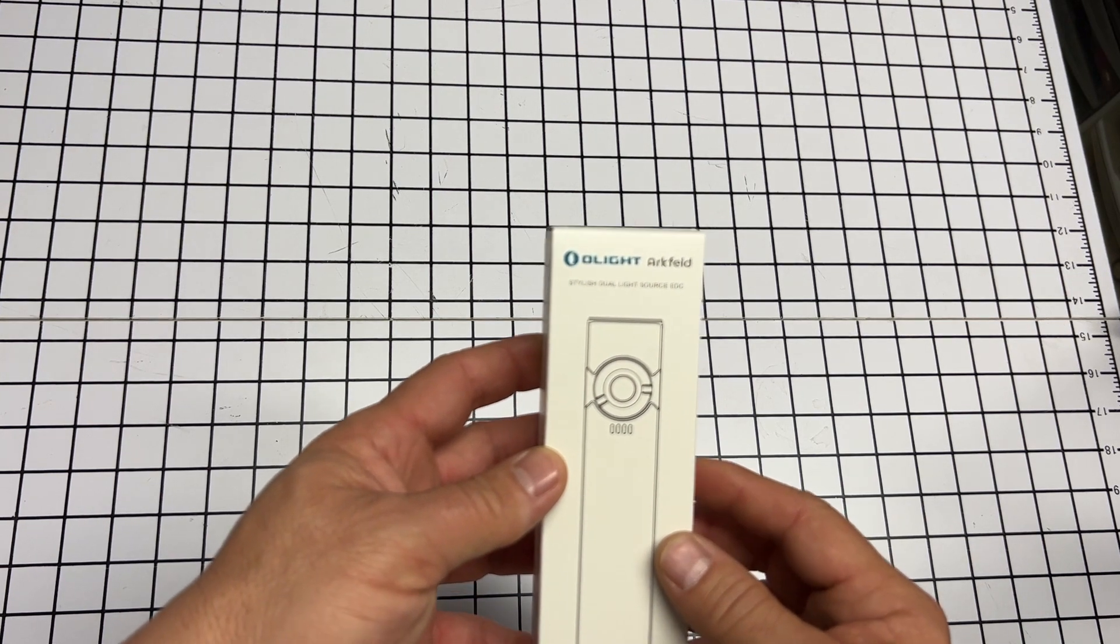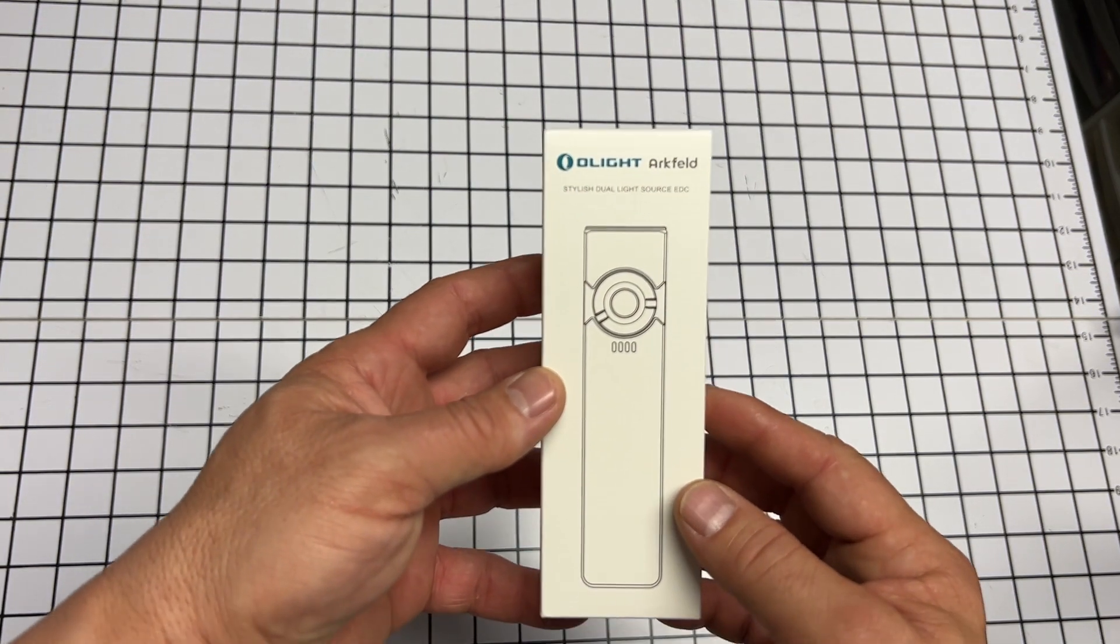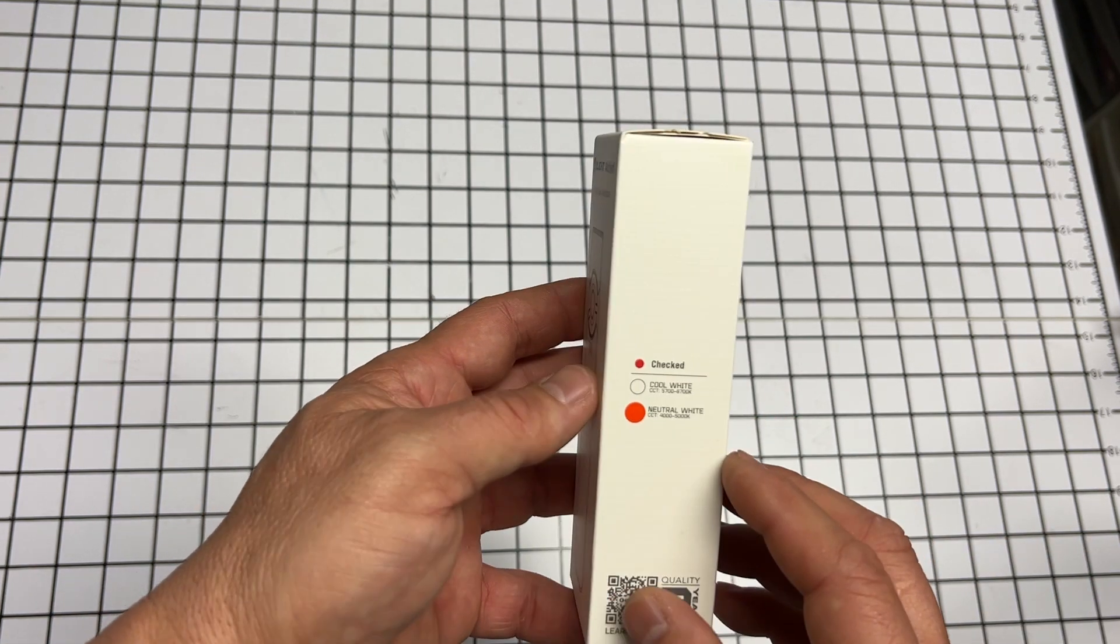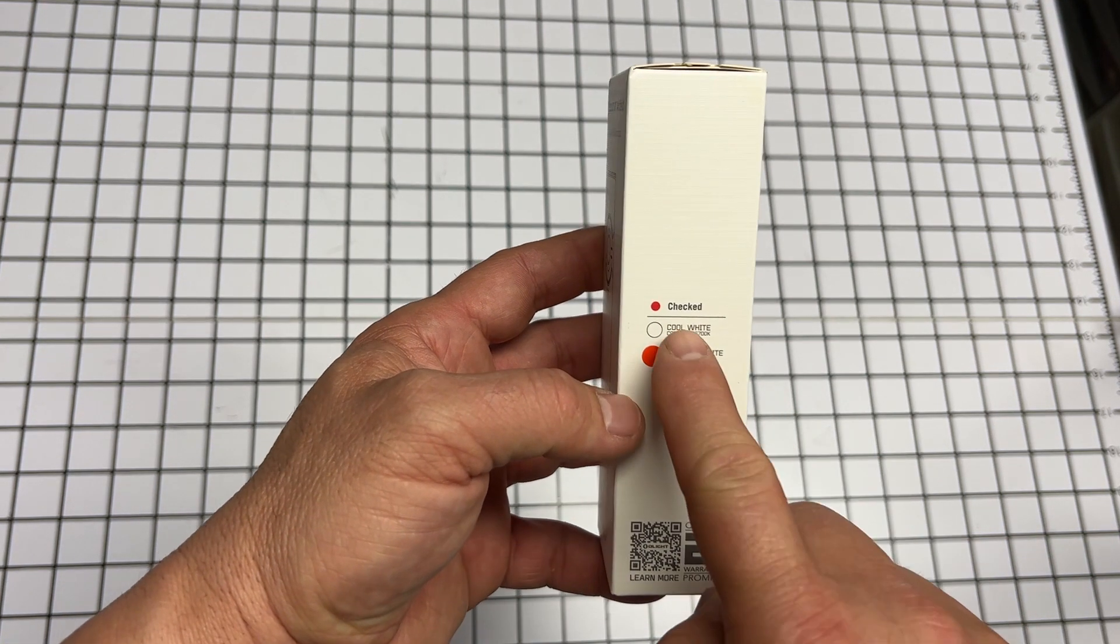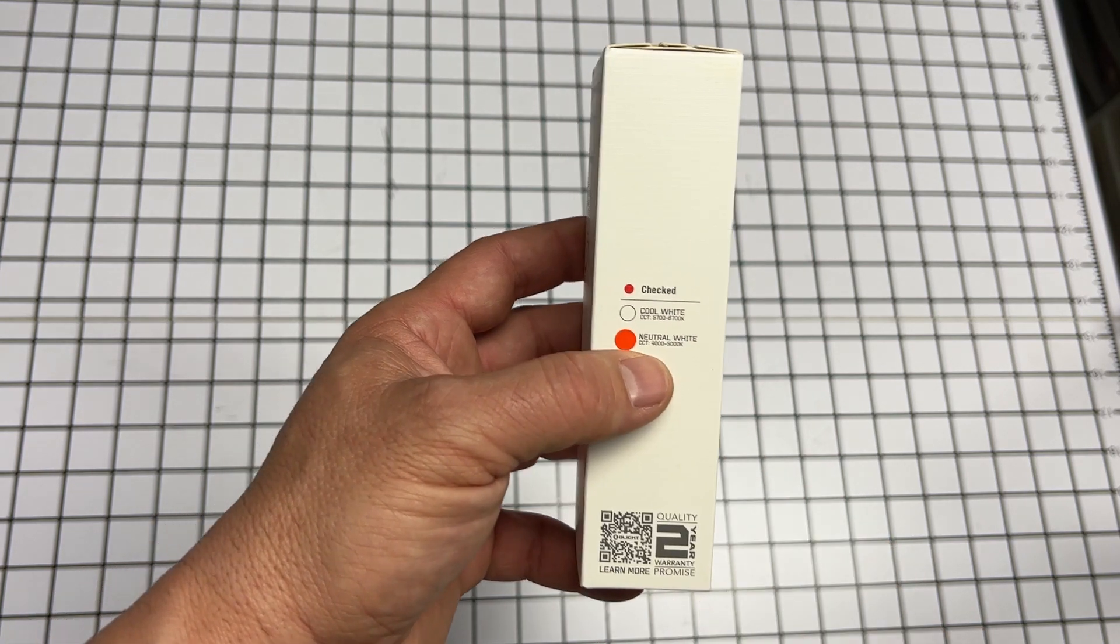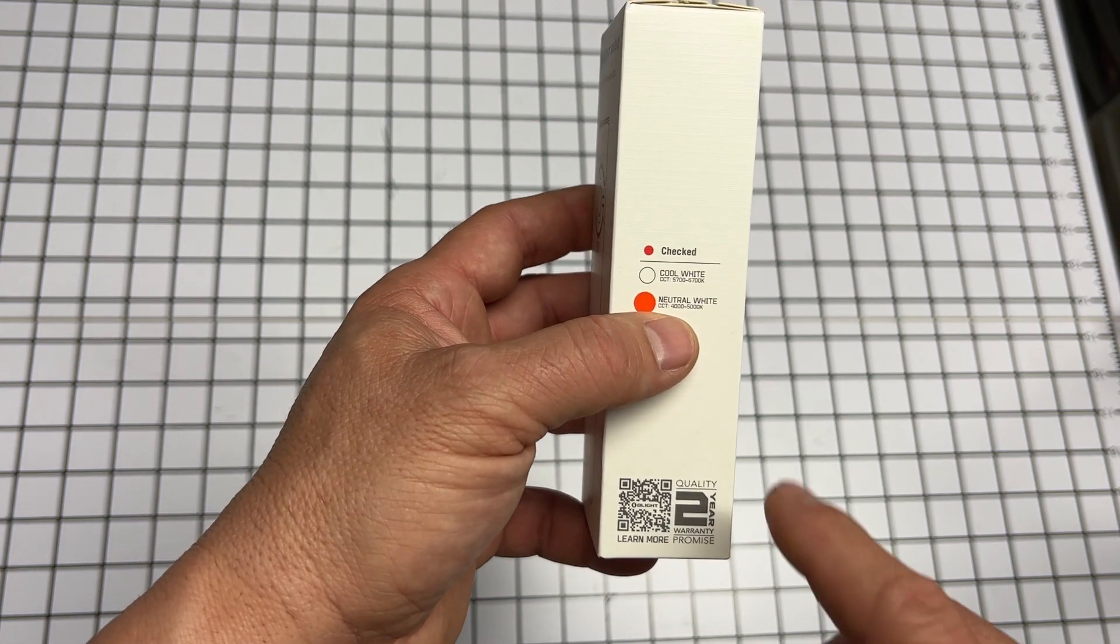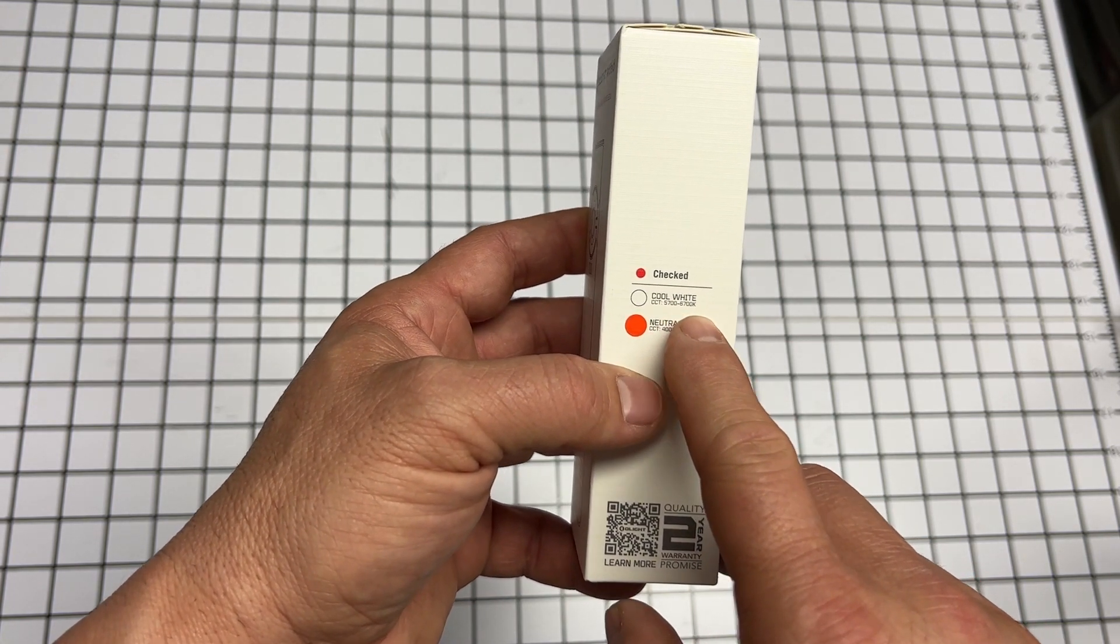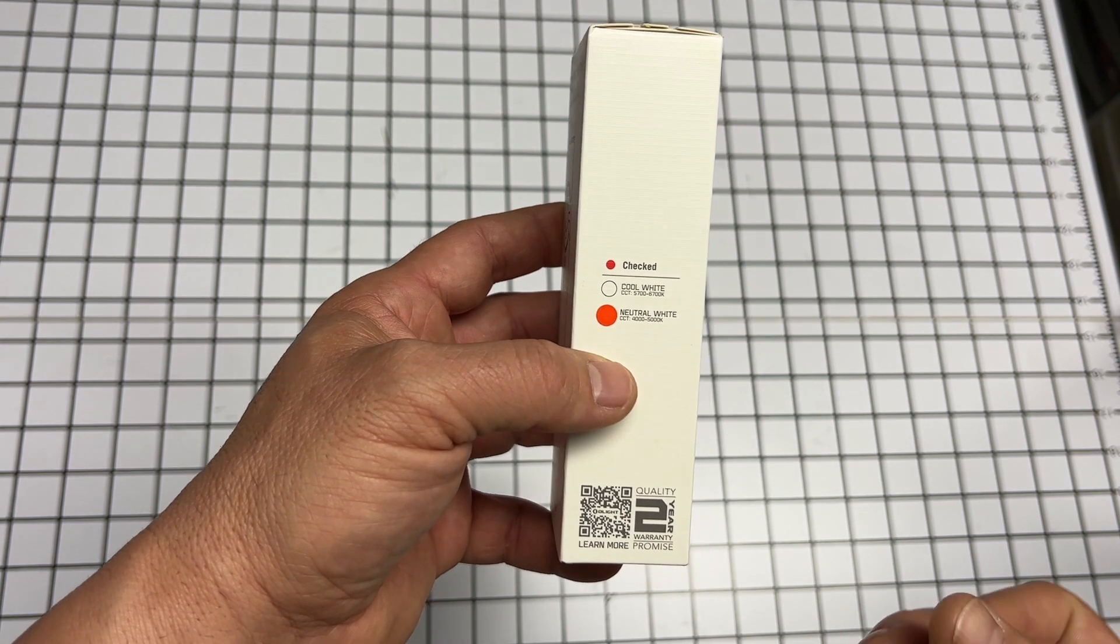The OLIGHT Arkfeld is a stylish dual light source EDC flashlight. This is a really cool light I picked up off the web. It's a neutral white, 4,000 to 5,000K, which is a little bit warmer than the cool white light, which is 5,700 to 6,700K. That's just the temperature of the light.